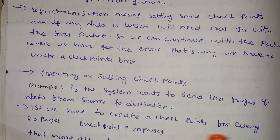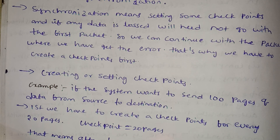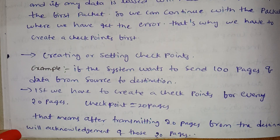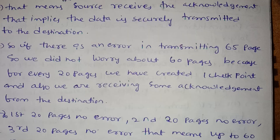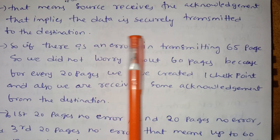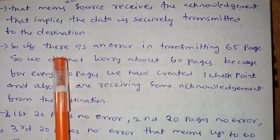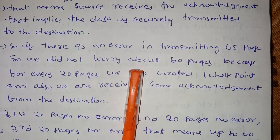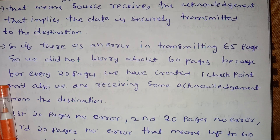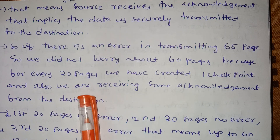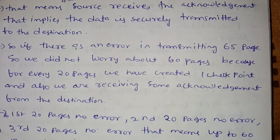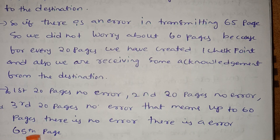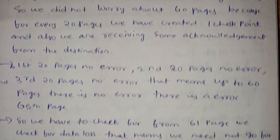For every 20 pages, a checkpoint is created. After transferring 20 pages to the destination, we receive an acknowledgement. That means the source receives the acknowledgement, which implies the data is securely transmitted. So if there is an error at page 65, we don't worry about the first 60 pages, because for every 20 pages we have a checkpoint and receive acknowledgement.